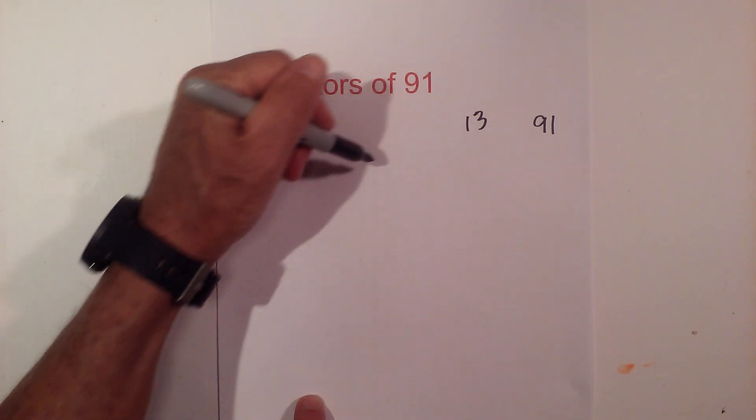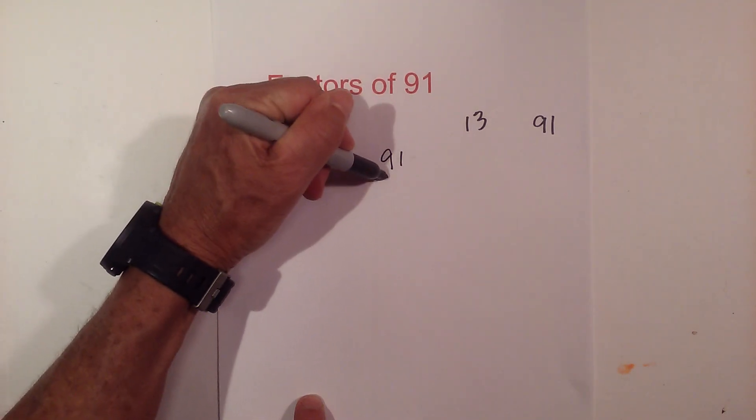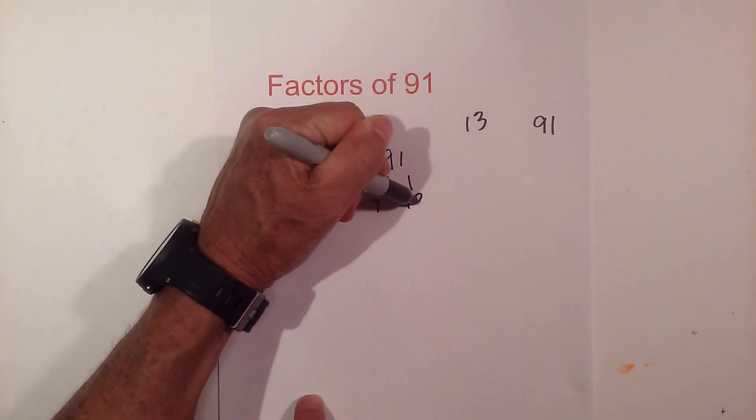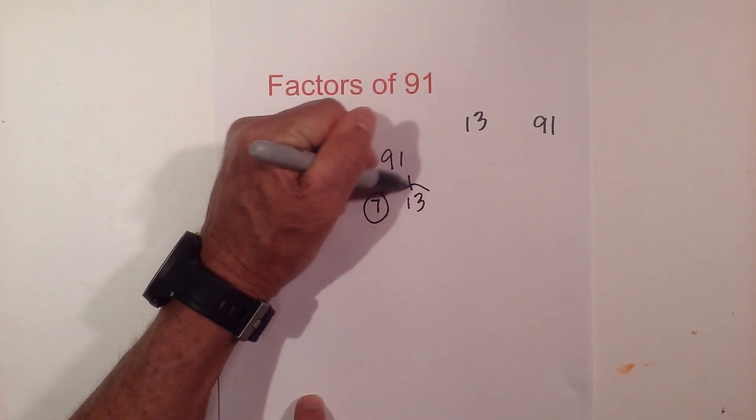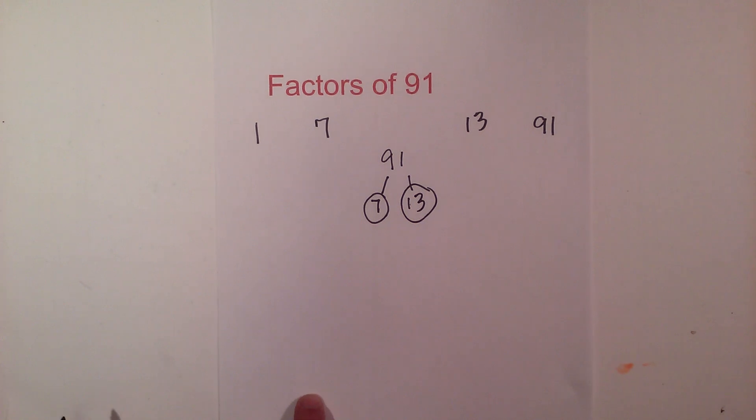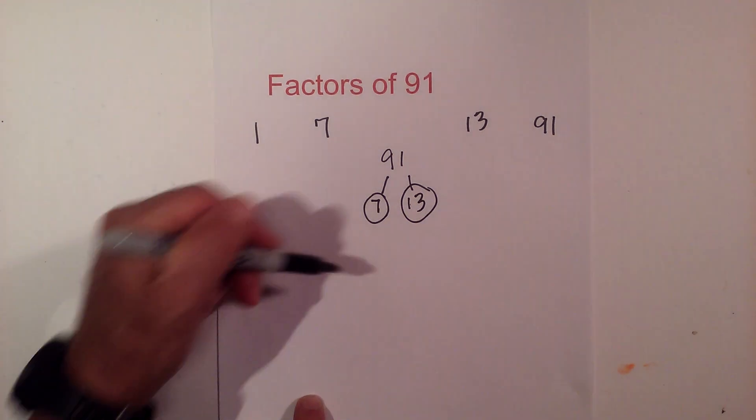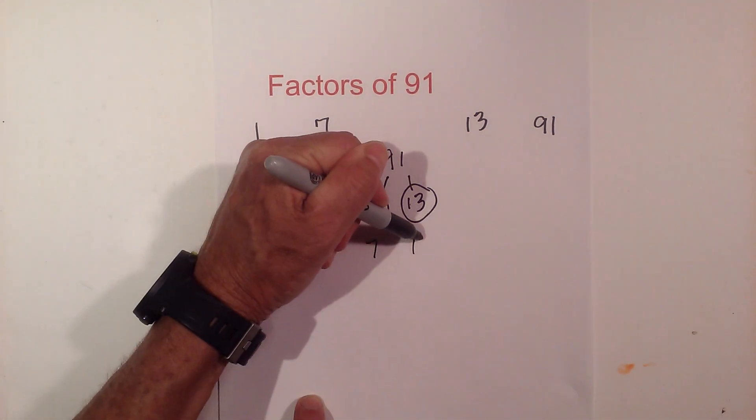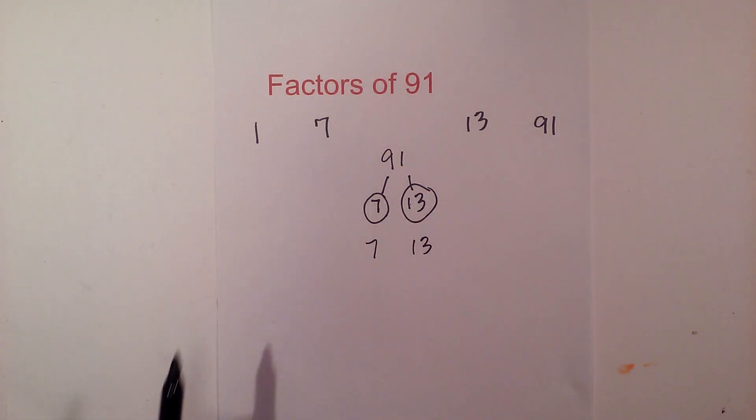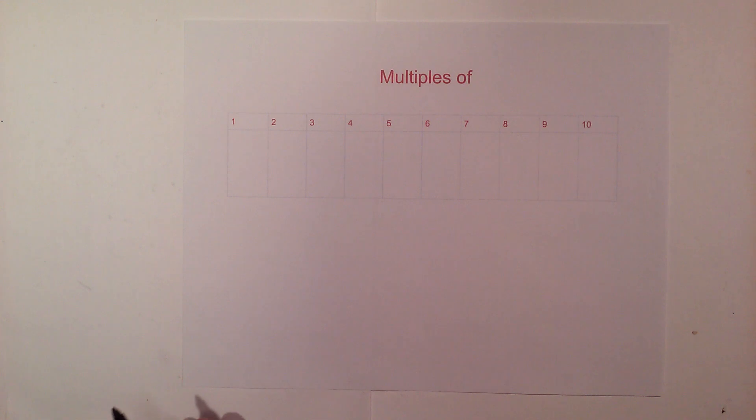Now the prime factors of 91: we have 7 times 13. Circle both of these because they are prime. So the prime factors of 91 are 7 and 13. Now let's go through the multiples of 91.